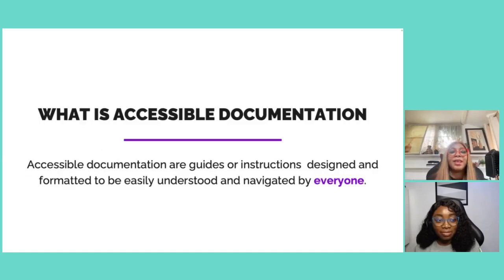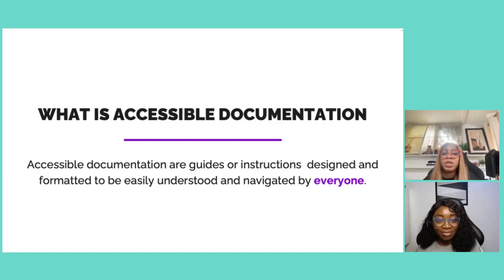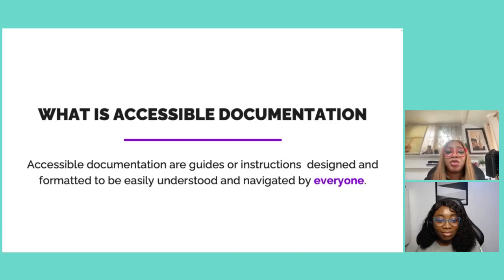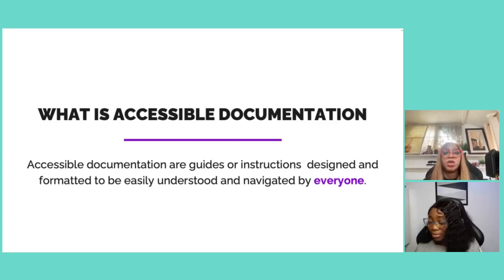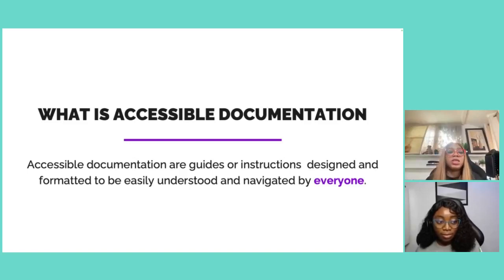To understand how to improve accessibility within your open source community, we need to understand what it means. In the simplest way, accessible documentation is any document, guide, or instruction within your open source community that is designed and formatted in a way that is easy for everyone to understand — including people with disabilities.